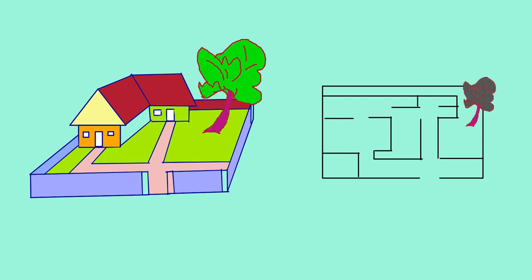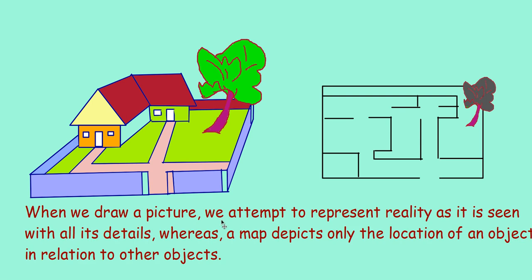When we draw a picture, we attempt to represent reality as it is seen with all its details. Whereas a map depicts only the location of an object in relation to other objects.